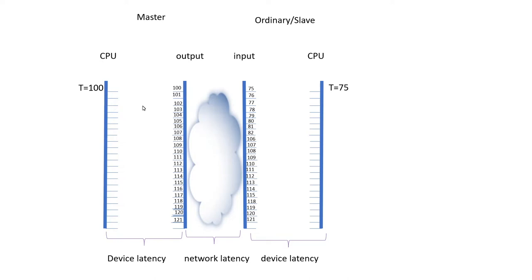I've got two timelines indicating the master — part is the CPU and part is the output queue. The time it takes a packet to exit a device is dependent on the scheduling algorithms and the amount of traffic coming through, so there can be a delay within the master itself from when the packet is generated by the CPU to when it's forwarded out through an output queue. The CPU generates a sync packet saying the time it was generated is 100. It's forwarded out into the network, and the time it exits is saved by the master — it actually exited at time 101.